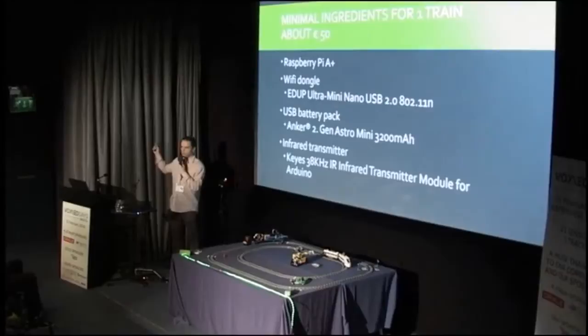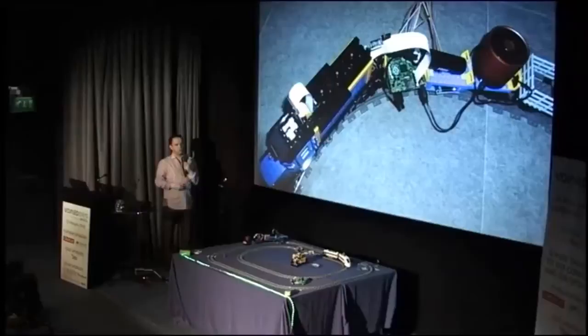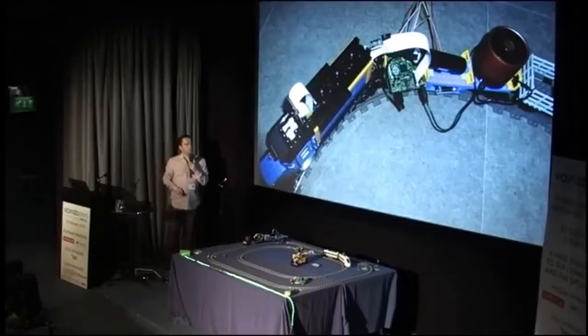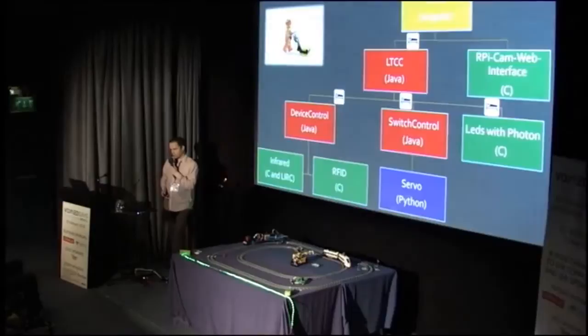If you want to do this yourself at home it's perfectly possible. You need a Raspberry Pi — and probably lots of you already have one collecting dust on a shelf. You only need a Wi-Fi dongle, a battery pack, and an infrared transmitter. You could also add a lot more: a live camera which is a Raspberry Pi camera streaming full HD video, a speaker, and an RFID reader to determine the position on the track.